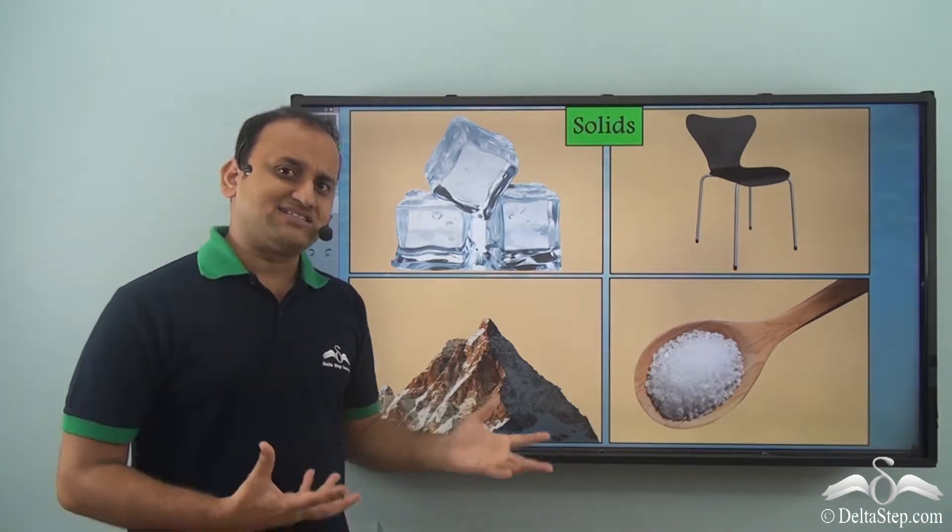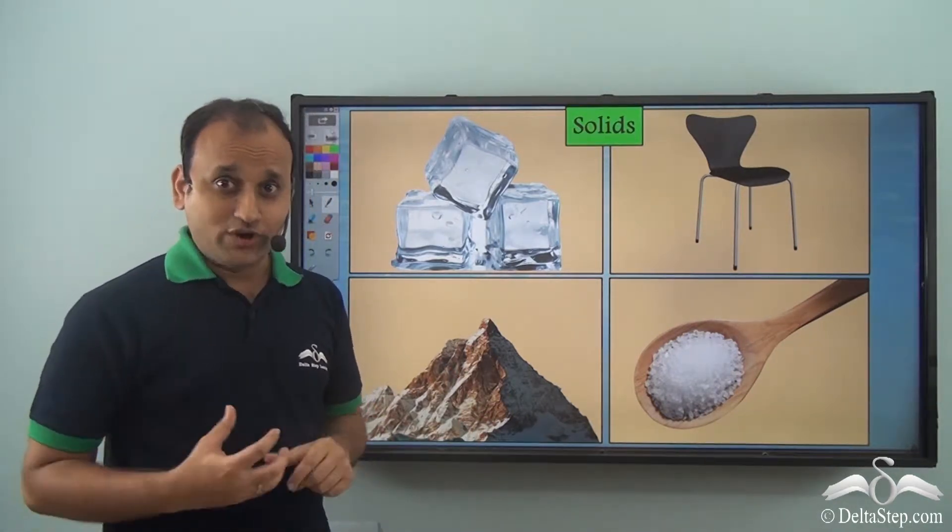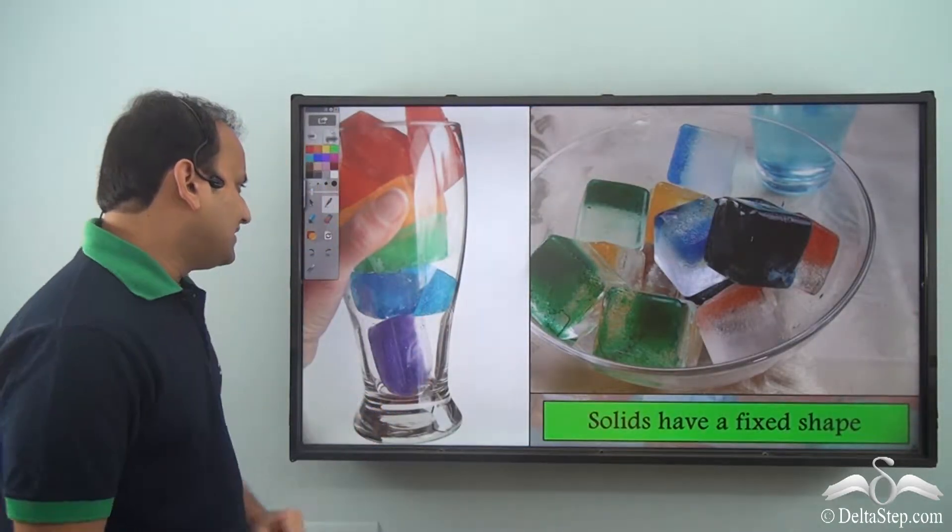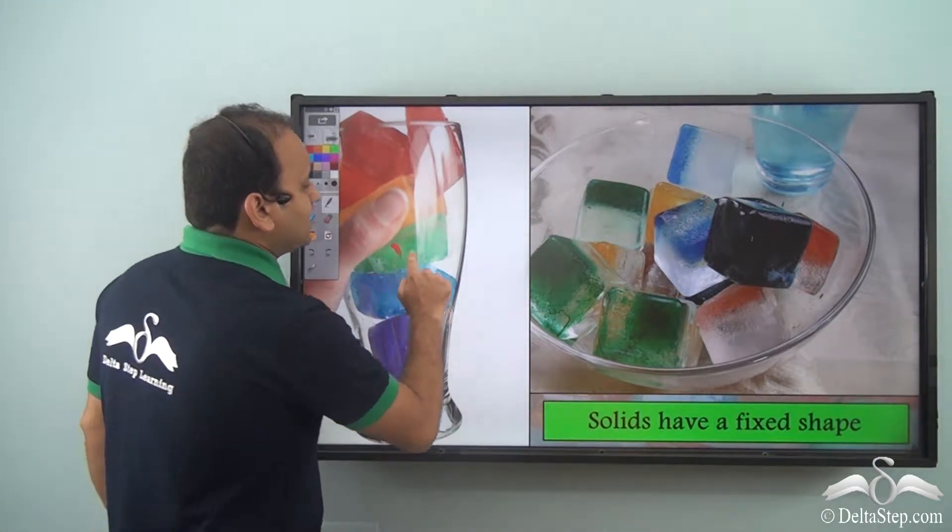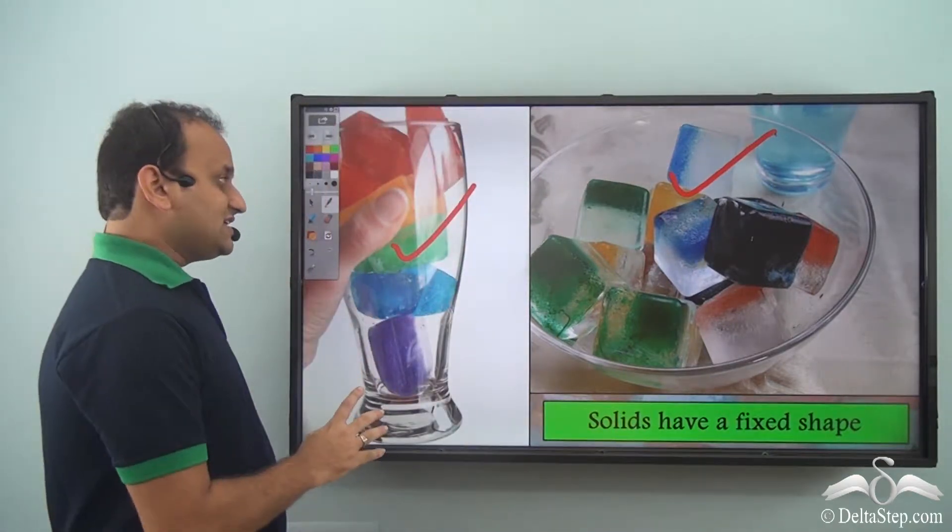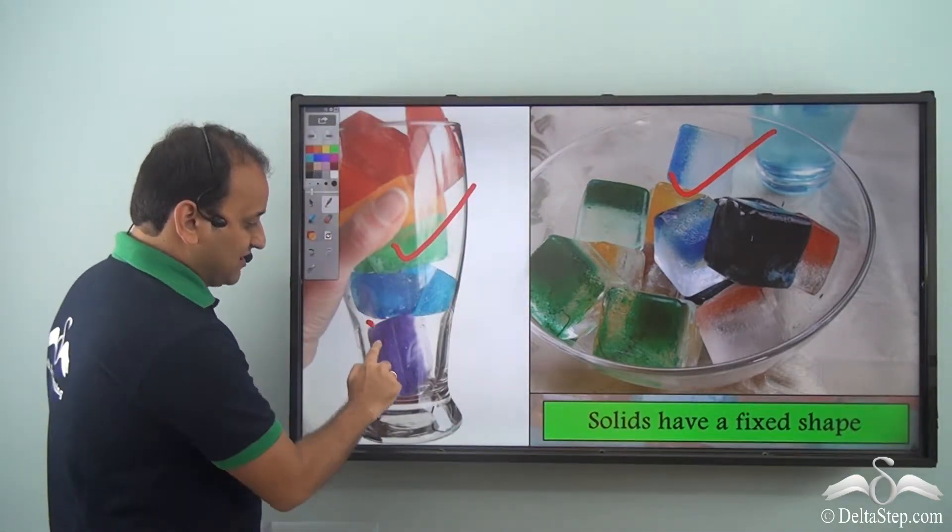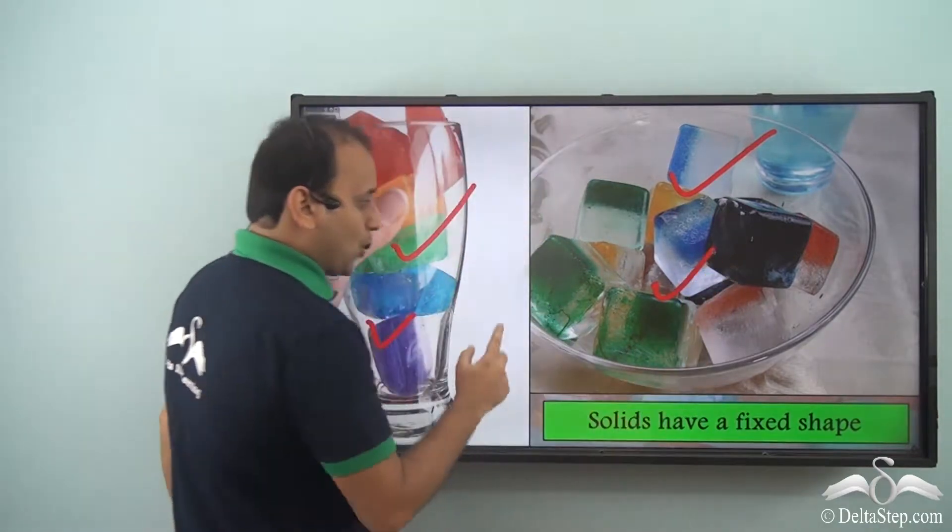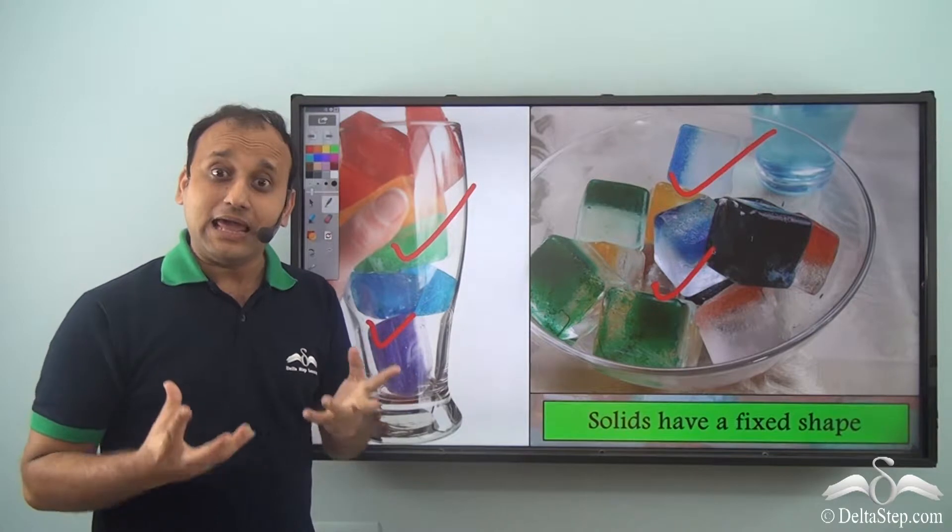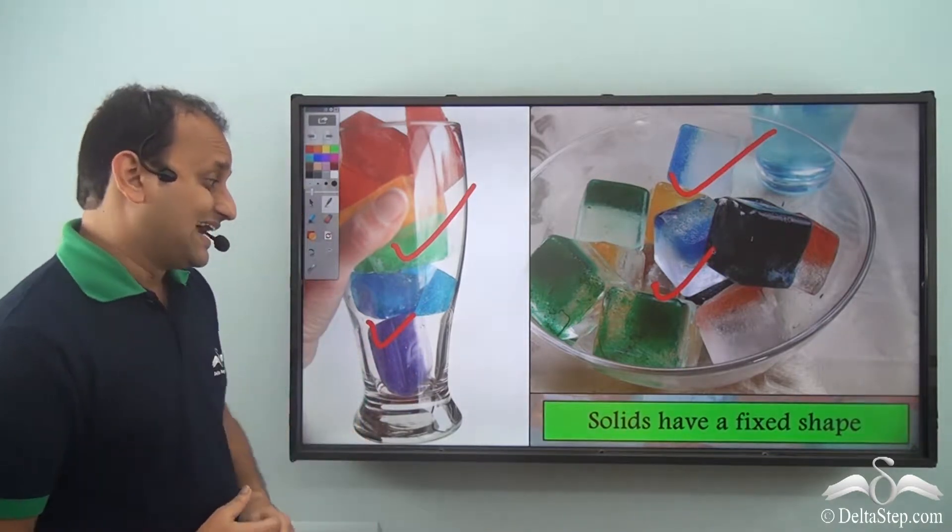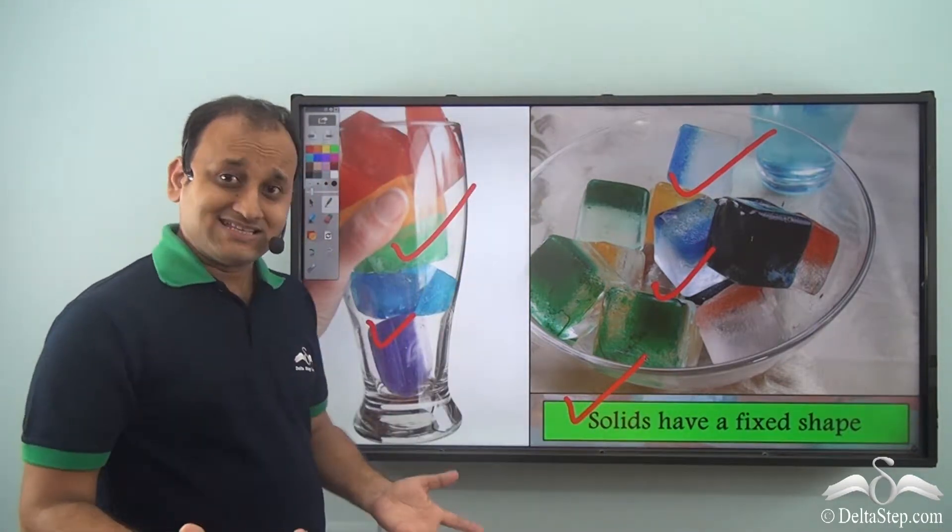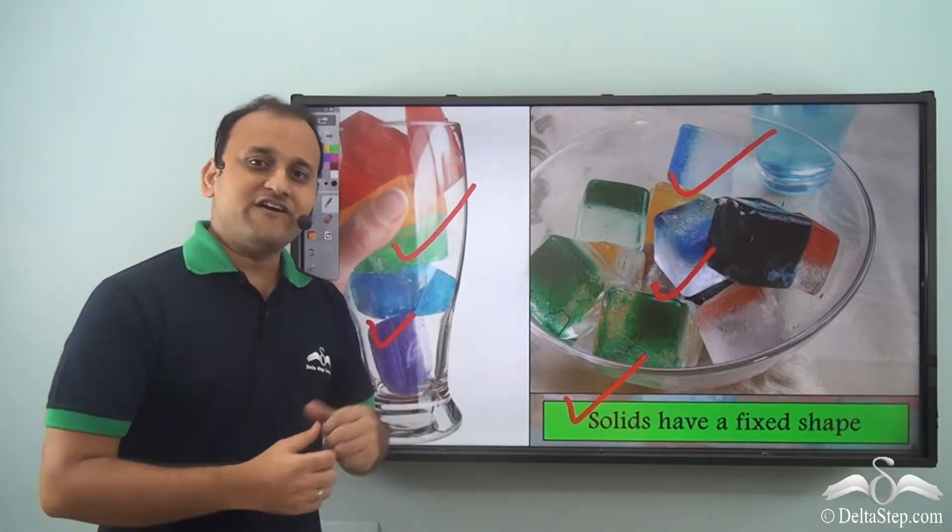Now what exactly makes them solid? If you see here, the ice is stored here in a glass and here in a bowl. Do you see the ice has its fixed shape? It is holding its shape no matter where you store it. That is a very important property of solids. Solids have a fixed shape, and since ice is solid, that is why it has a fixed shape.